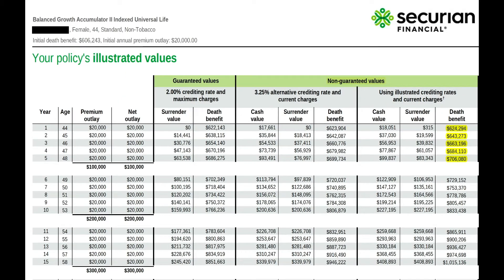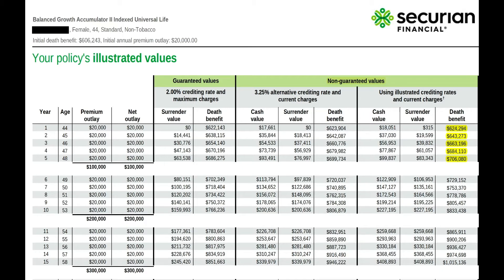The death benefit differs from the initial death benefit because this illustration shows an increasing death benefit. You're not buying more life insurance — the death benefit is simply the initial death benefit plus the accumulation value, or cash value, and this is what your beneficiary will get if you were to pass away. So, $606,243 plus cash value of $18,051 equals $624,294.